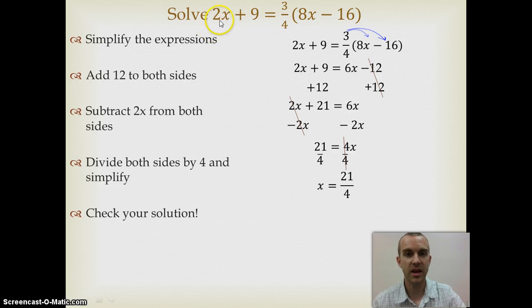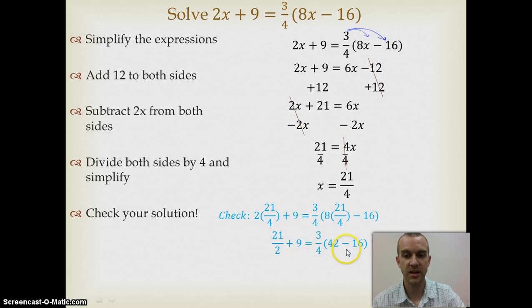So now I simplify each expression. This becomes 21/2 plus 9, and then if I simplify inside parentheses, that becomes 42 minus 16. I'm going to add the 21/2 and the 9, and I'm going to do 42 minus 16. So I'm just simplifying, like I would, order of operations.